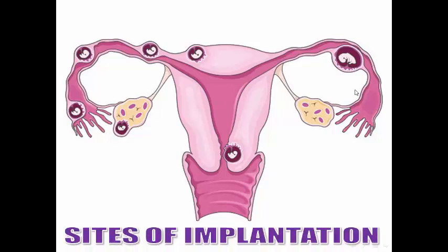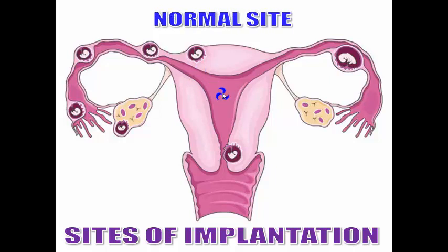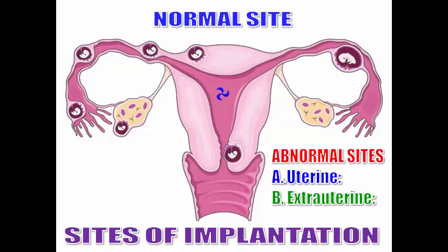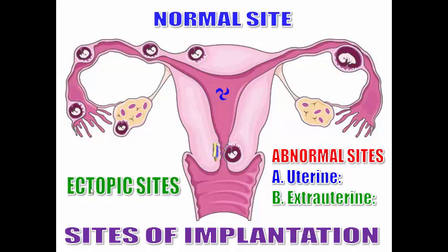Sites of implantation: we have two major sites, normal and abnormal. The normal site is in the upper part of the posterior wall of the body of the uterus in the midline. The abnormal sites may be uterine or extra-uterine. The uterine site is in the lower part of the uterus and is called placenta previa. The extra-uterine sites are called ectopic sites; the commonest is the uterine tube — tubal pregnancy — then ovarian pregnancy, and abdominal pregnancy.